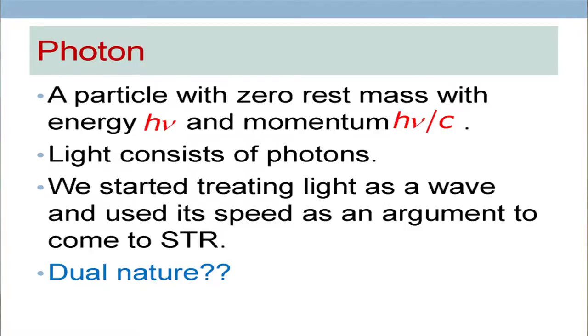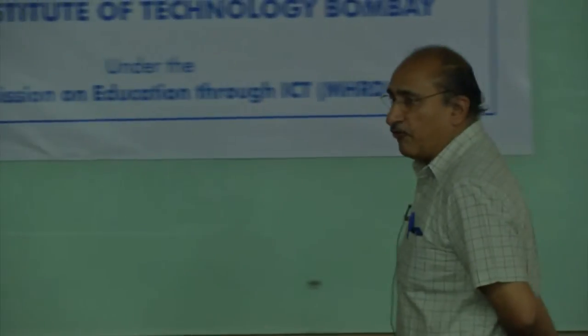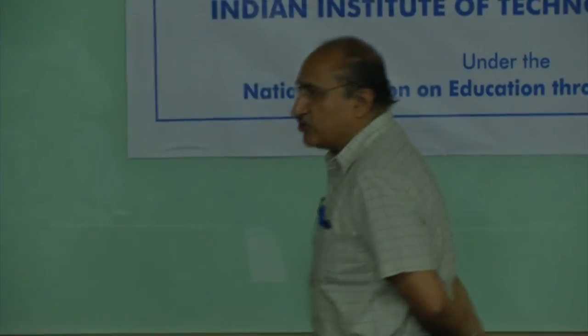It has energy h-nu which we know from other experiments. It should also have a momentum equal to h-nu over c. We believe that light consists of photons. In fact, this is slightly a dilemma because when we started our relativity lessons, we looked at light and realized it is an electromagnetic wave — therefore it must travel with a speed given by 1 over the square root of epsilon-naught mu-naught. But then suddenly we come back and talk of a totally different language and try to say that light actually consists of particles.